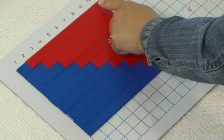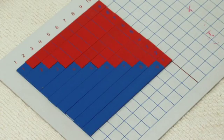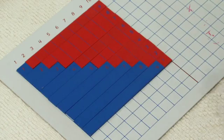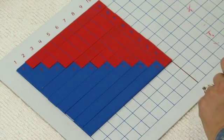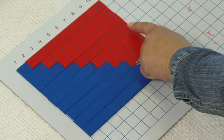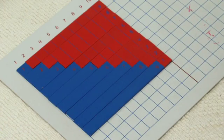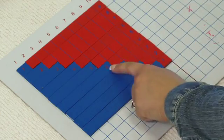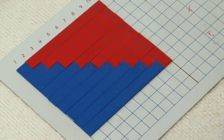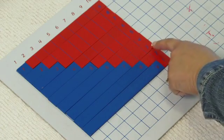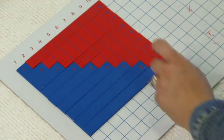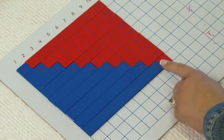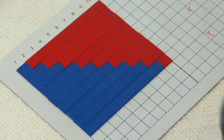One and nine equals ten. Two and eight equals ten. Three plus seven equals ten. Four plus six equals ten. Five plus five equals ten. Six plus four equals ten. Seven plus three equals ten. And eight plus two equals ten. And last, nine plus one equals ten.